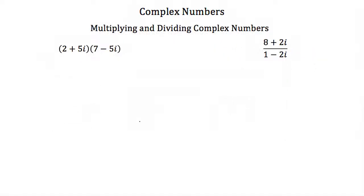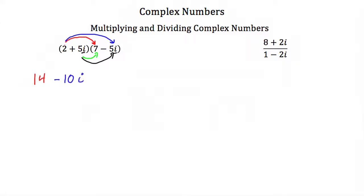Now when you multiply two complex numbers — here we have 2 plus 5i times 7 minus 5i — again just treat i like it's a variable and FOIL these numbers out. You take the first terms and multiply them together, the outside terms, then the inside terms, and then the last terms. So we would have 2 times 7 is 14, 2 times minus 5i would be minus 10i, 5i times 7 would be 35i, and 5i times minus 5i would be minus 25i squared.